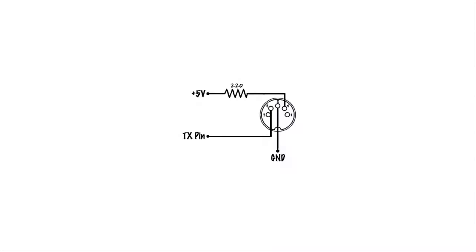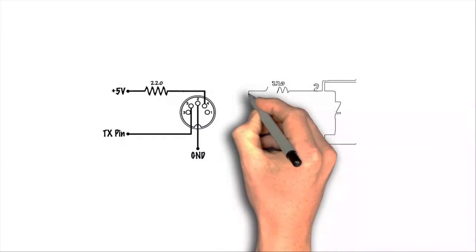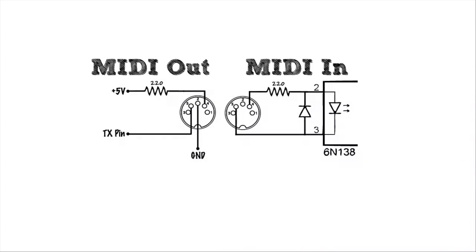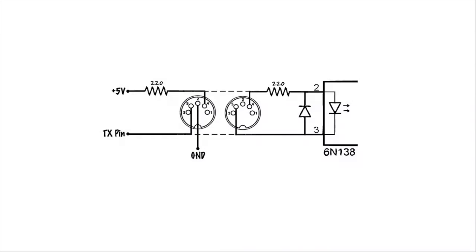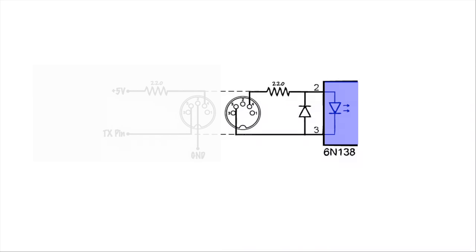The TX pin can be either 5 volts or 0 volts depending on what's happening with the MIDI signal. In order to properly analyze this circuit we're going to need to look at the whole picture, so let's connect our MIDI out circuit to the MIDI in circuit of another instrument. The dotted lines represent the connection made by the MIDI cable. This part of the input circuit contains a MIDI input jack, a 220-ohm resistor, a small signal diode, and the LED contained in the optocoupler.